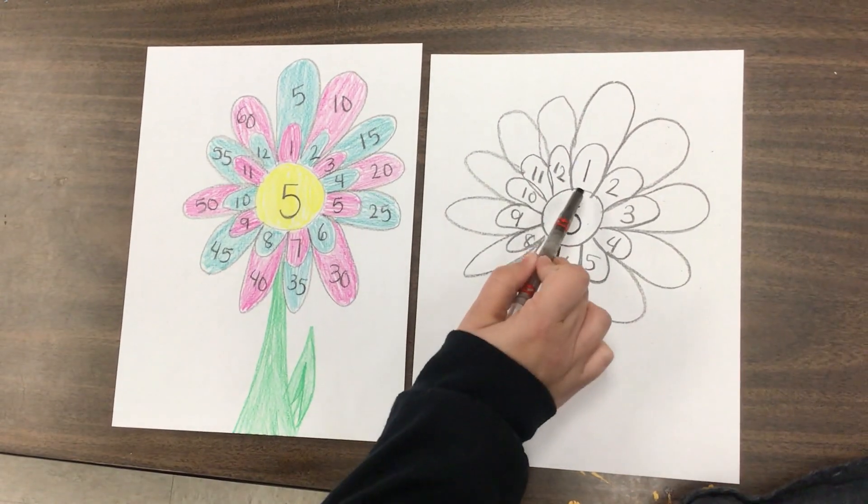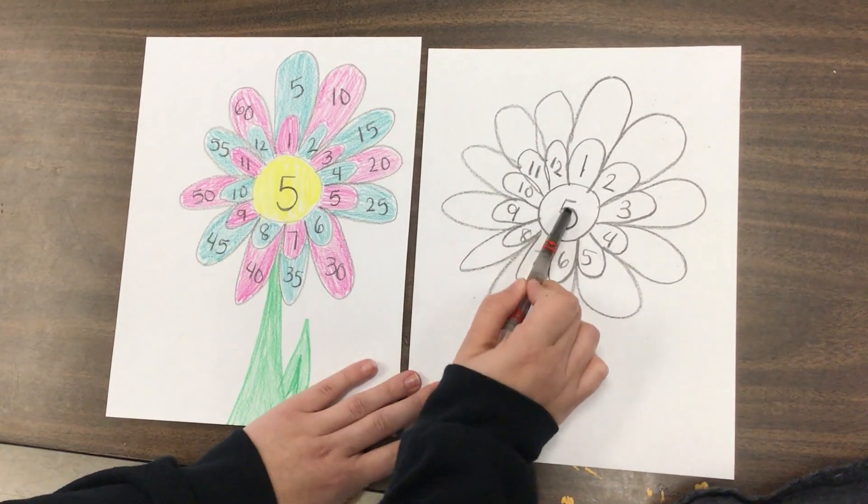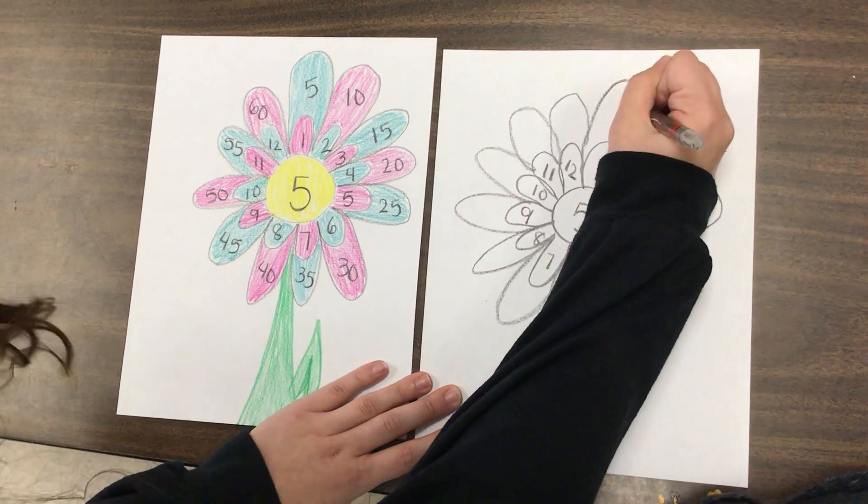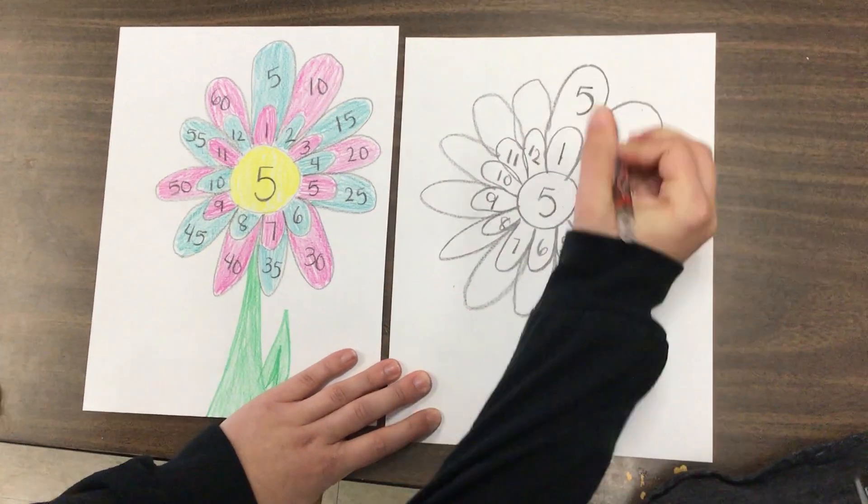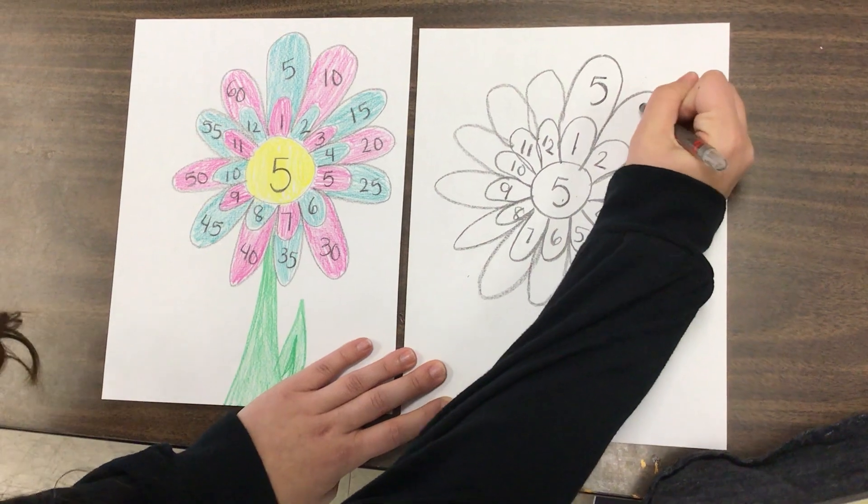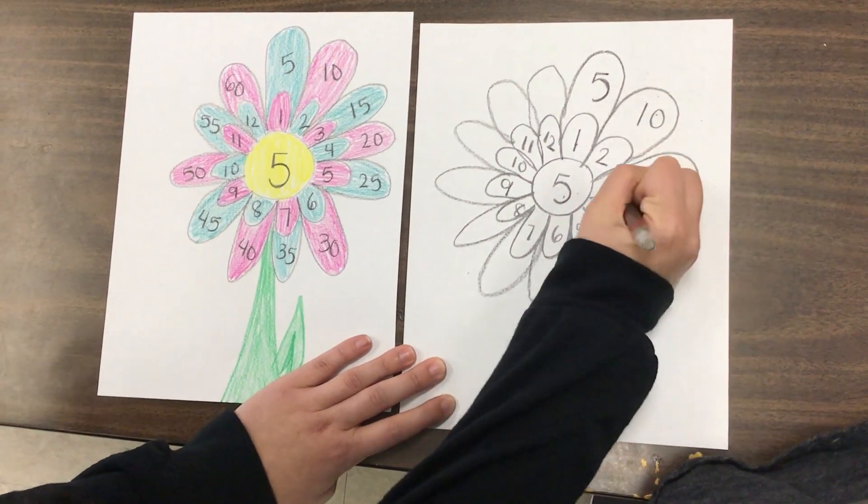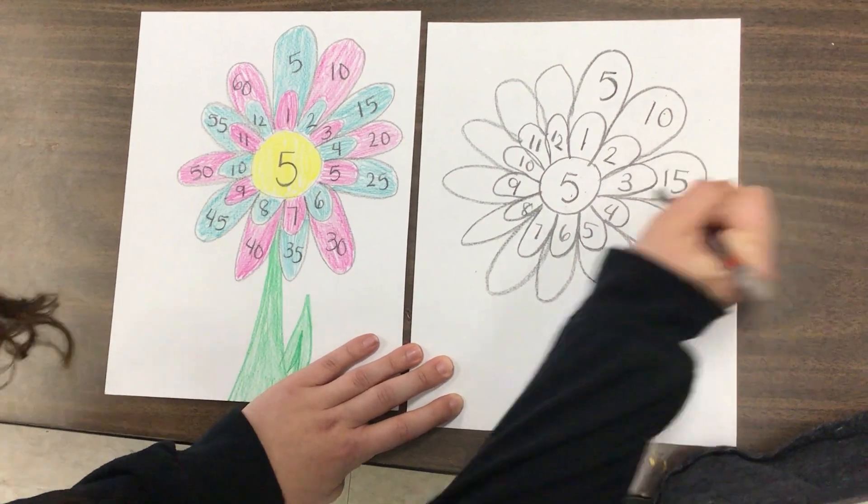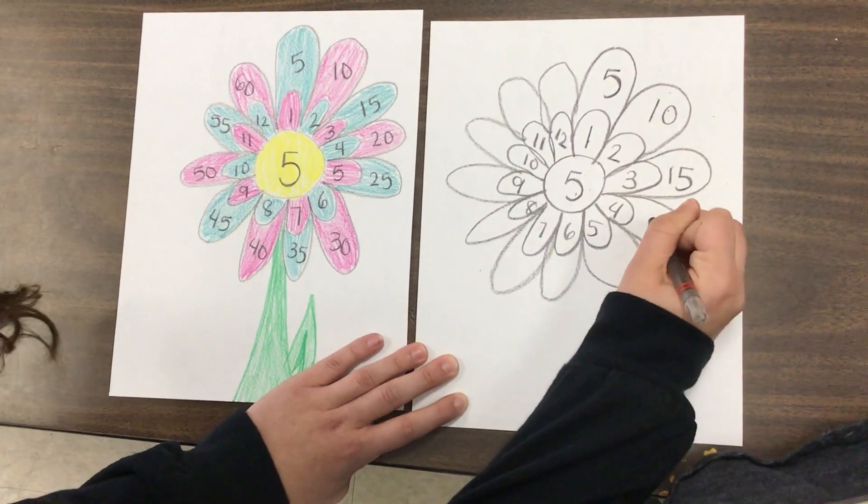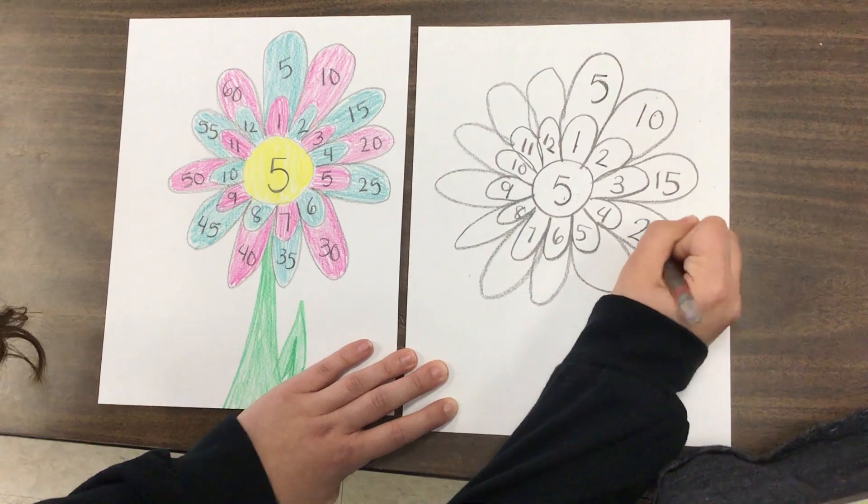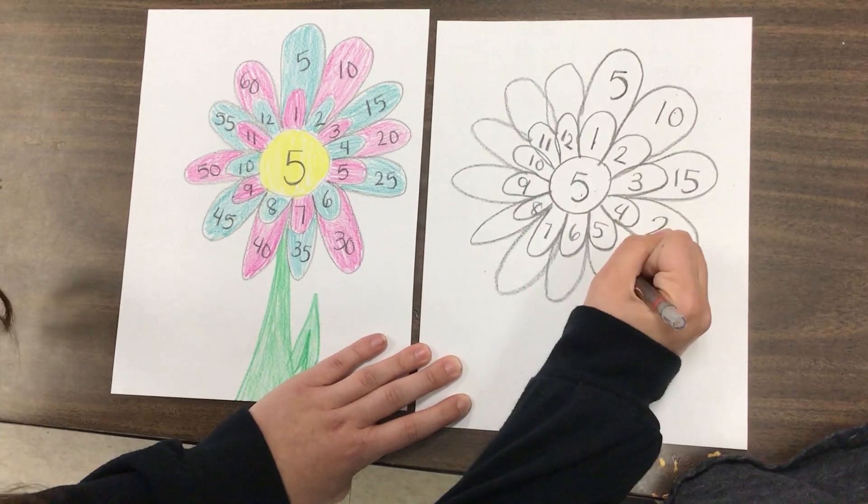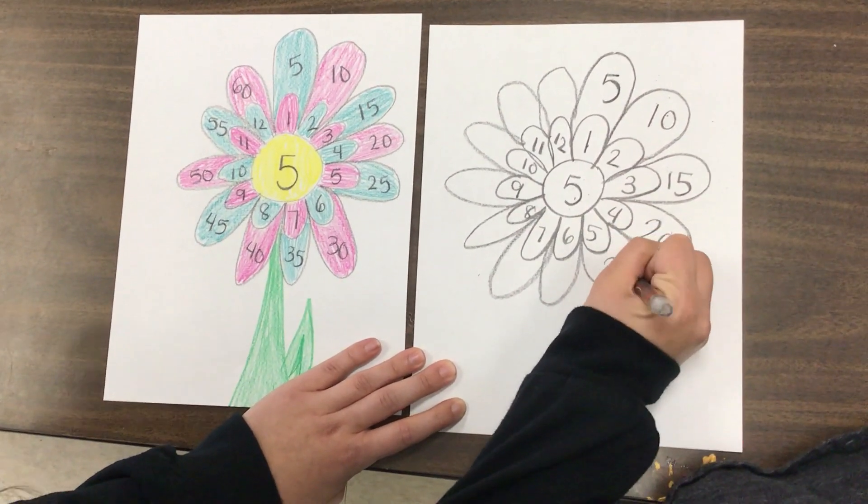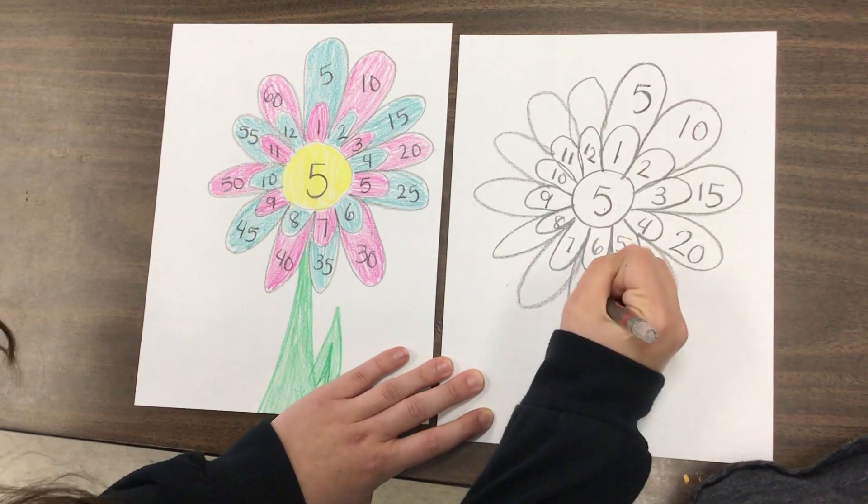At that point then, you would ask yourself, one times five equals what? Five! Two times five equals? Ten! Three times five equals? Fifteen! Four times five equals? Twenty! Five times five? Twenty-five! What's six times five? Thirty! Seven times five? Thirty-five!